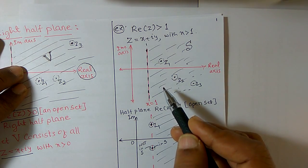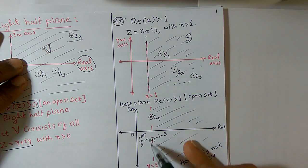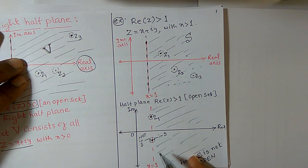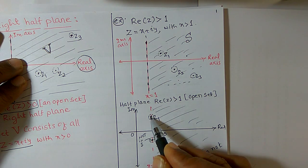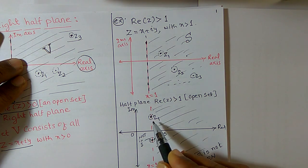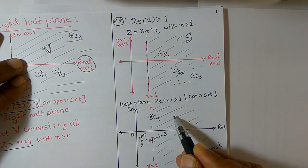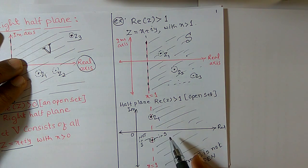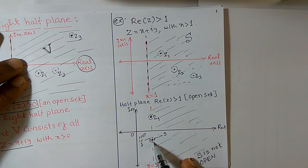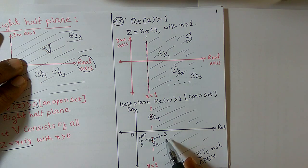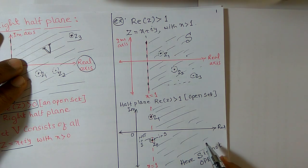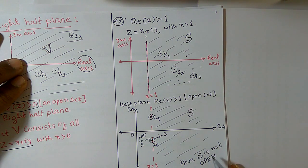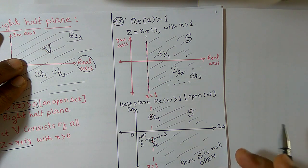Now, I want to take a point on the line x = 1. Say z1 is a complex number on that line. Construct an open disk around it — observe that some points belong to the region and some points do not belong to the region. Similarly, take one more complex number z0 on the line x = 1. Construct an open disk: again, some points belong to the region and some do not. In this case, I can say that S is not an example of an open set.